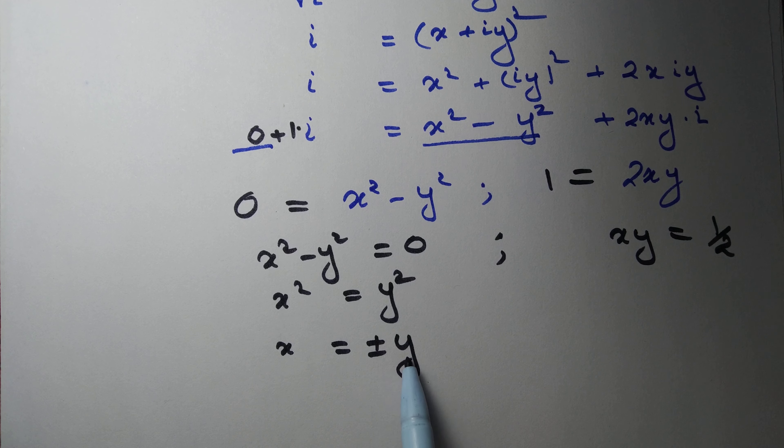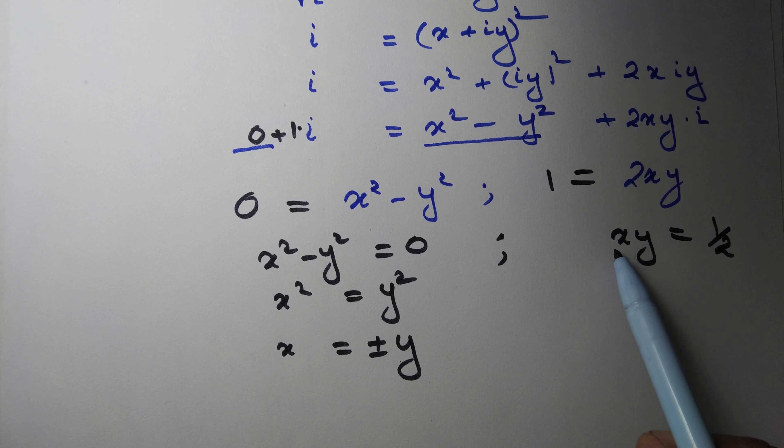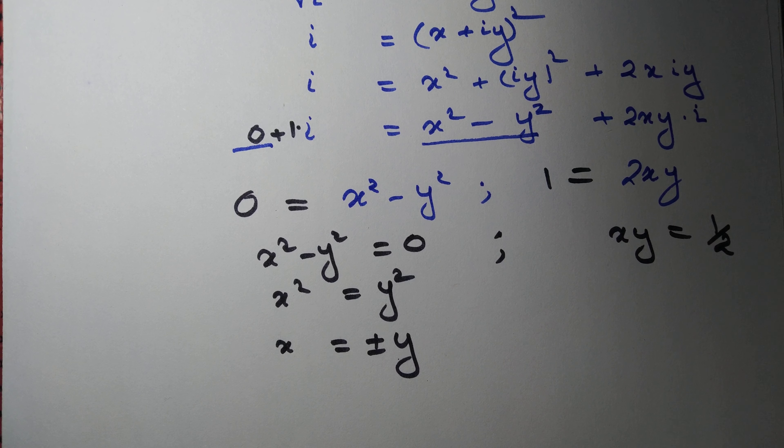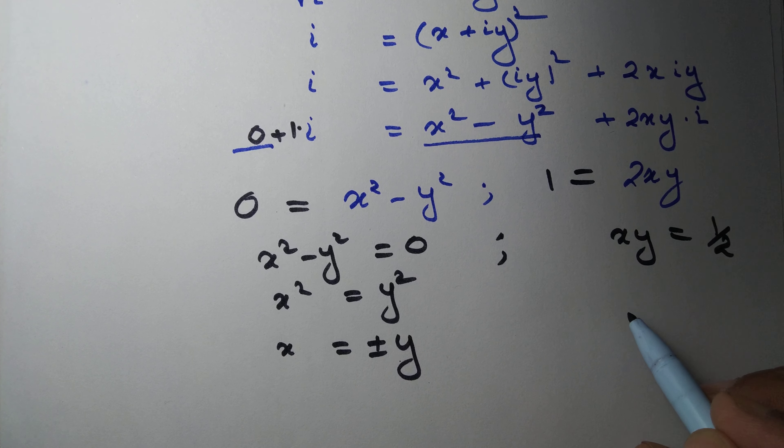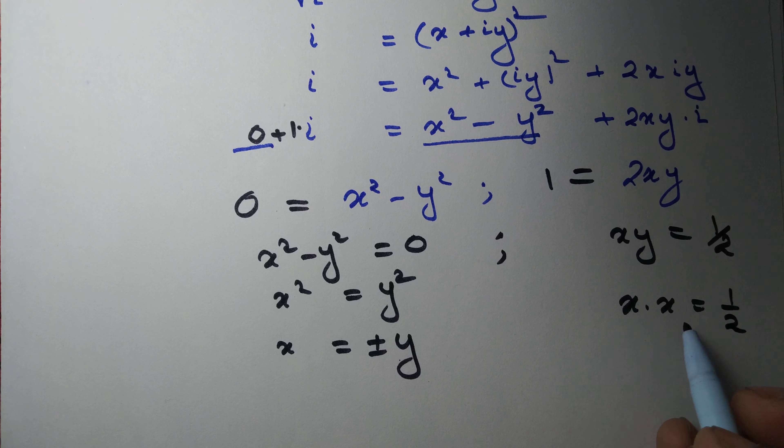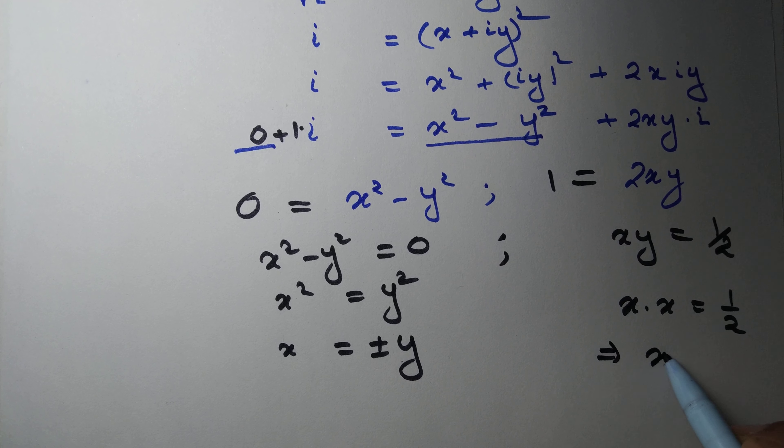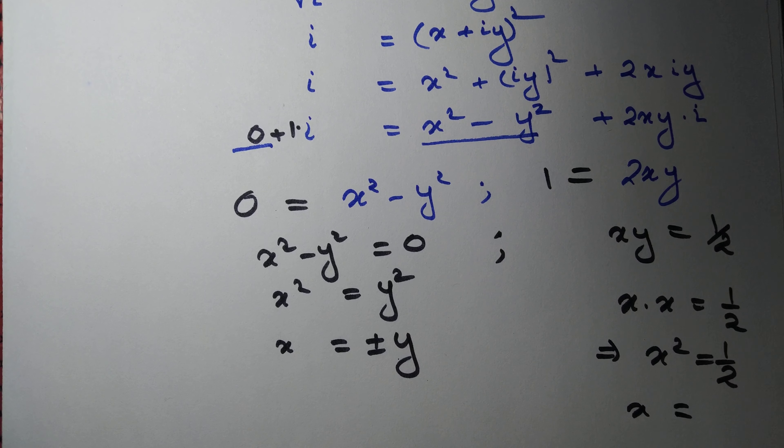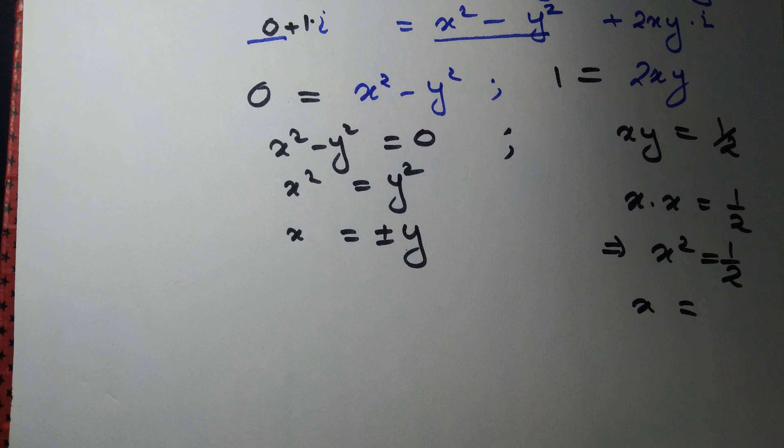Observe that if we take x equals minus y, then that cannot be true. Positive into negative is negative, but your product is half. So the only choice is x equals y. So when x equals y, we have x into x equals half. That will give us x squared equals half. And so x equals plus or minus 1 by root 2.